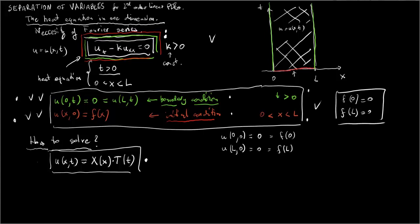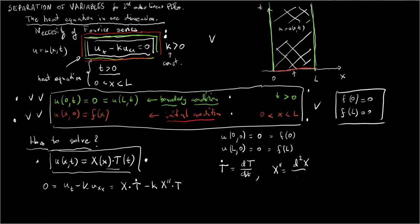If u = X(x)·T(t) is a solution, then we can calculate u_t minus k·u_xx and this must be 0. With this form, that gives X(x)·T'(t) minus k·X''(x)·T(t) = 0, where dot denotes the time derivative of T and prime denotes the x-derivative of X.